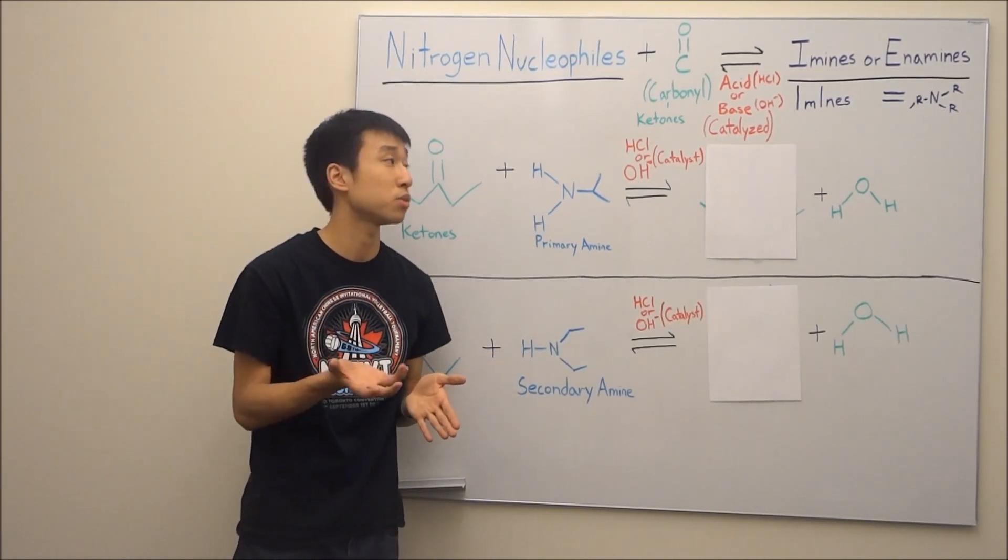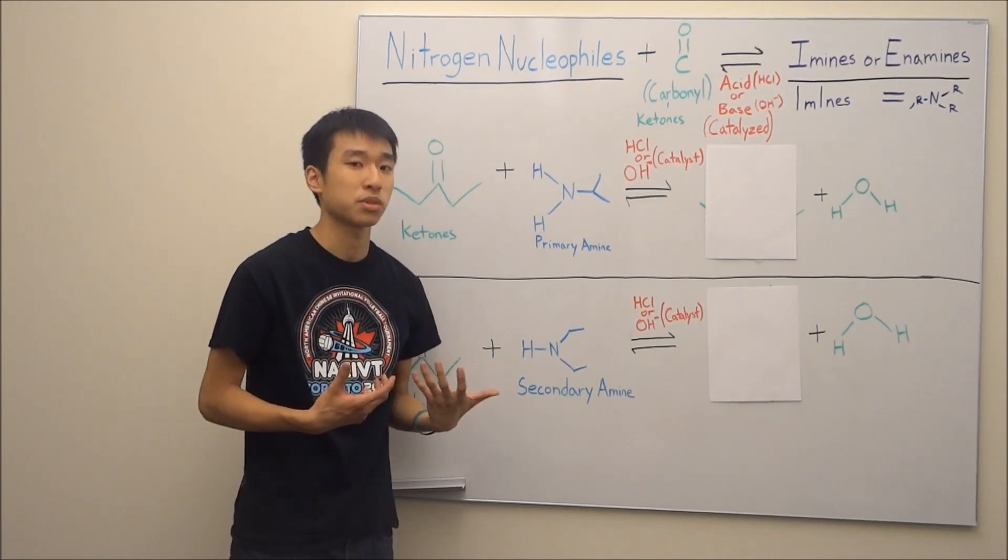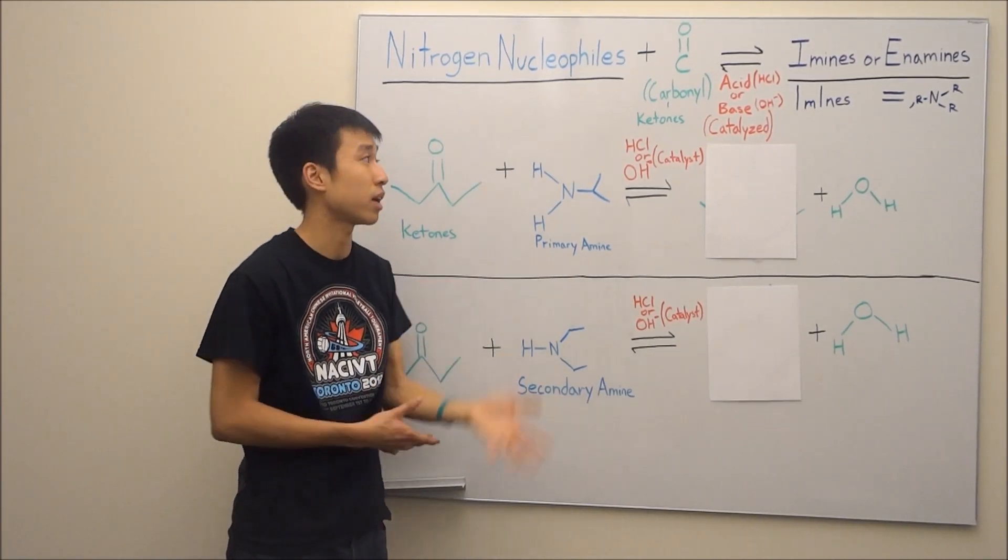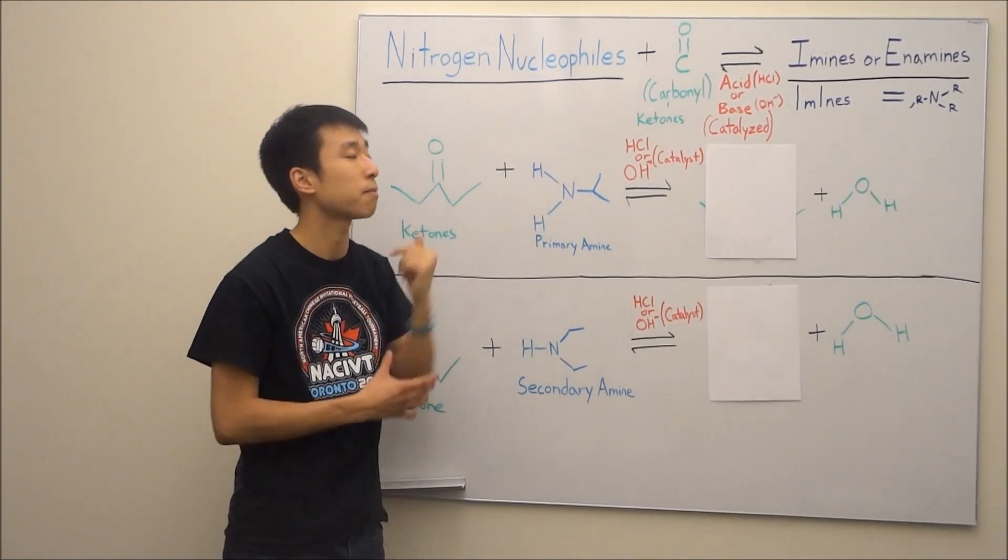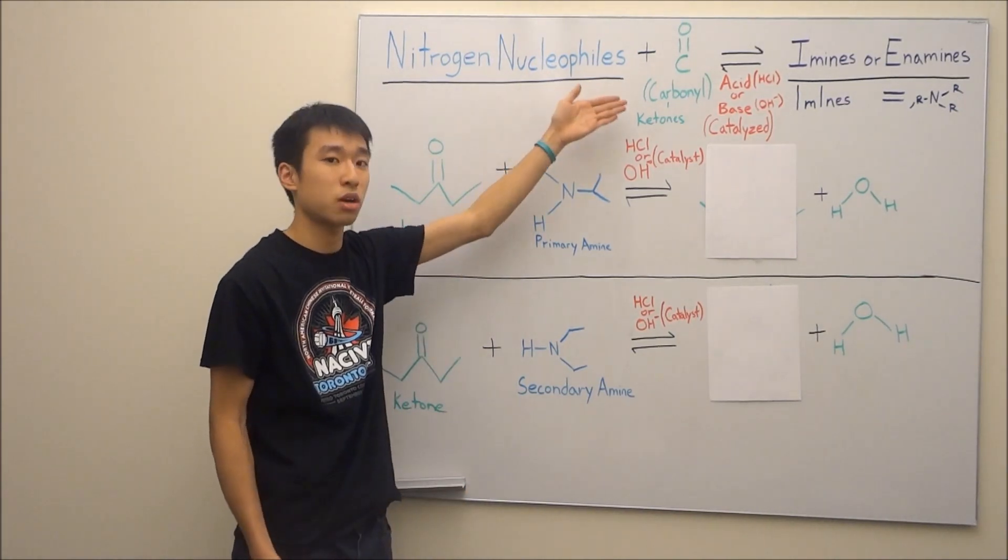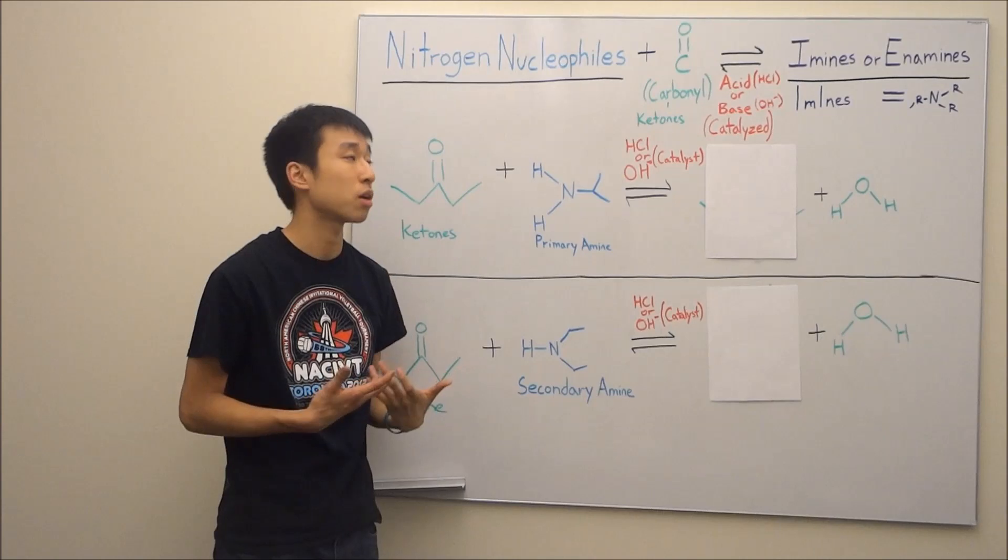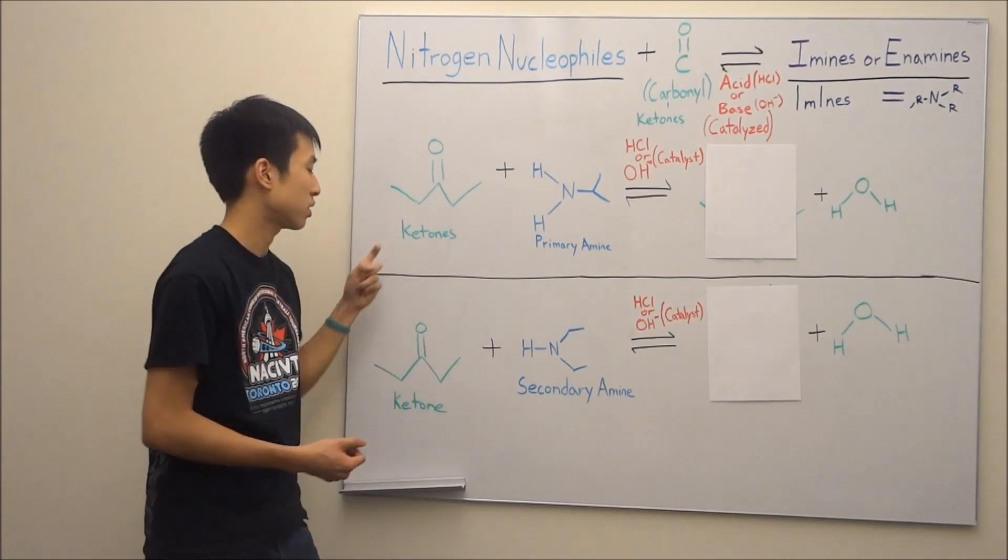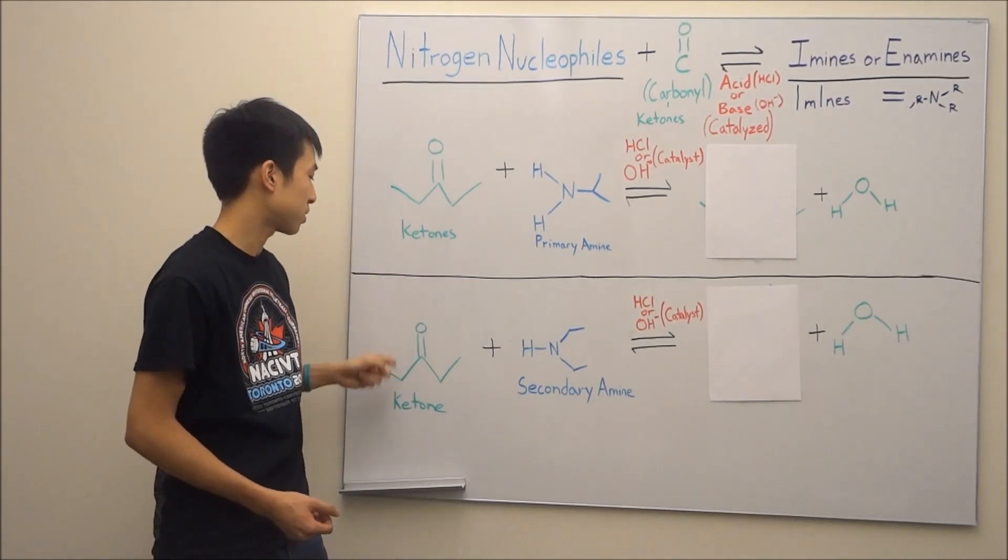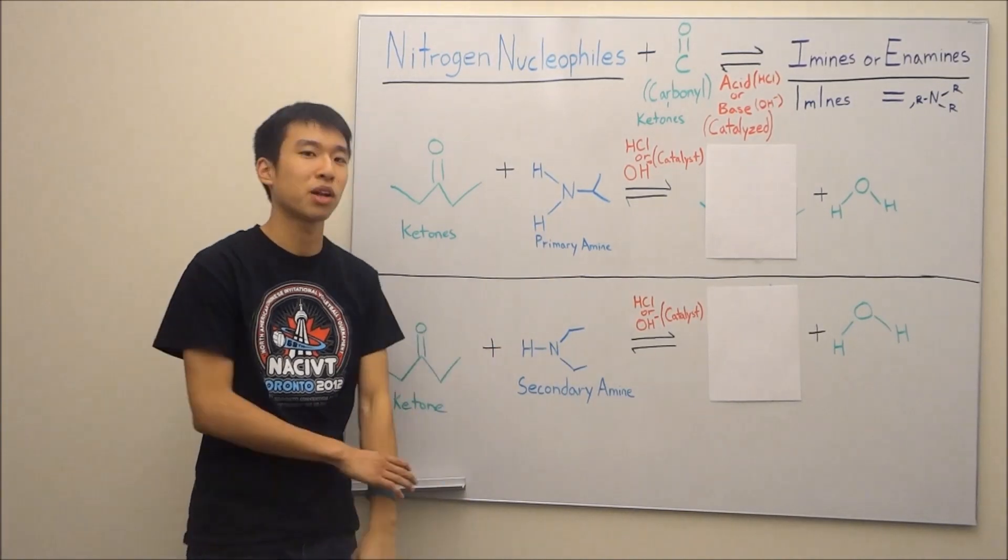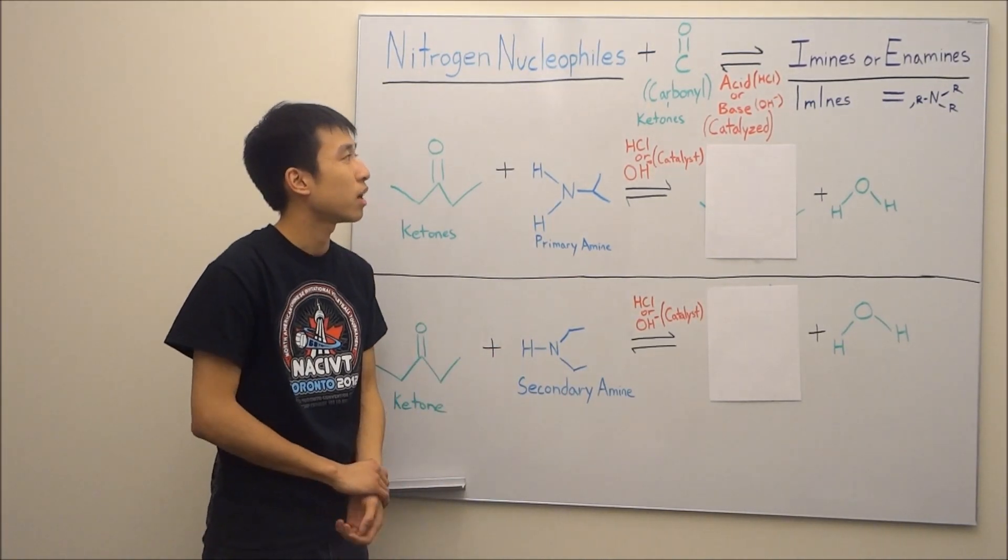But I just want to make sure that for those of you who didn't watch the acetal video, you guys will know what I'm referring to when I refer to these terms like carbonyl. So carbonyl is just a carbon-oxygen double bond. And one of the functional groups that contains a carbonyl is a ketone, which I use in my example here. I use this kind of like pigeon molecule.